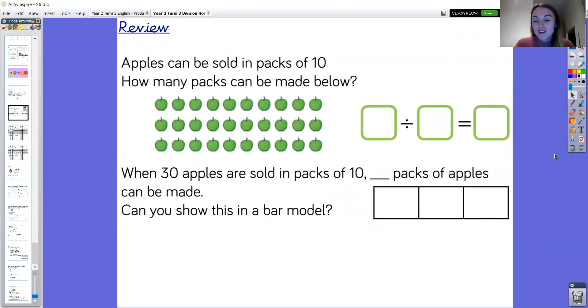Okay, so in our review phase today we are going to be focusing on dividing by 10. When answering this question the stem sentence is when 30 apples are sold in packs of 10, blank packs of apples can be made. And the question is also asking can you show this in a bar model. So year two what I'd love you to do is pause the video here, explore what you can see in the array, write the division, show your thinking in a bar model and say the stem sentence aloud to answer this question.